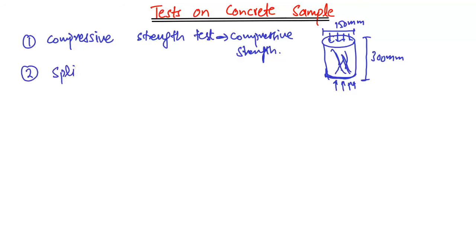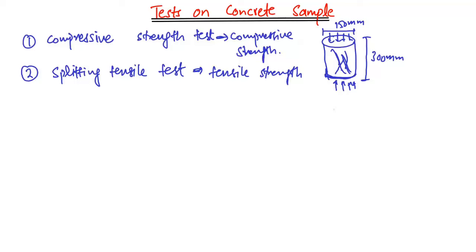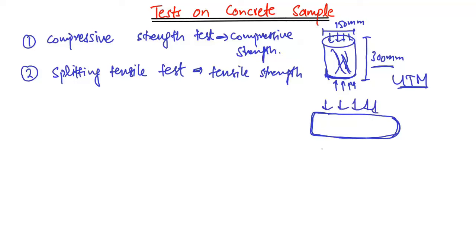The second test is the splitting tensile test, which is used in the lab to determine the tensile strength of concrete. The same cylinder geometry — 300 millimeters by 150 millimeters — is placed on its side in a Universal Testing Machine (UTM), and the load is applied in the transverse direction until the cylinder splits into two parts.